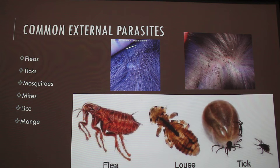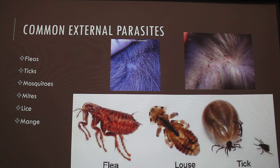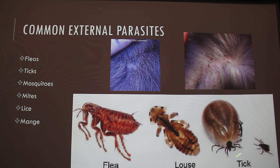These are lice nits — they're white, whereas with fleas they usually leave black flea dirt and the flea itself is dark, compared to the louse or lice which are white. Everyone's probably seen a tick. This is what it looks like crawling around, and this is what it looks like engorged after it has fed on your dog.